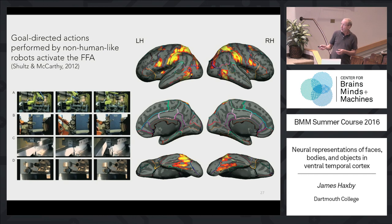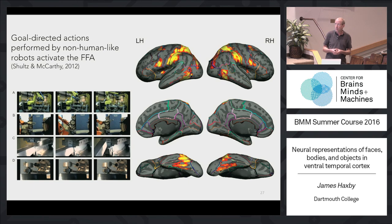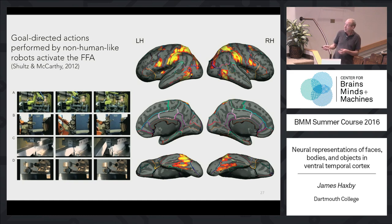A study from Greg McCarthy had people looking at videos of industrial robots doing tasks of varying complexity and varying levels of goal-directedness. They found that more complex, goal-directed tasks evoked stronger activity in ventral temporal cortex — again, in the fusiform gyrus.